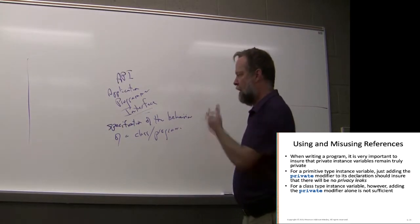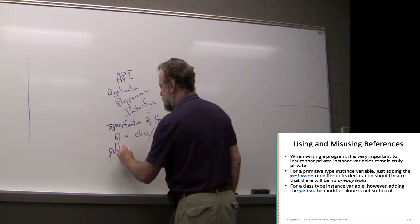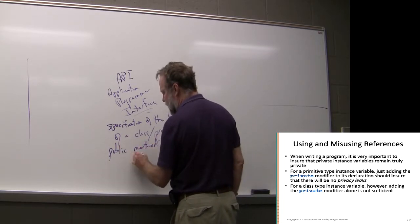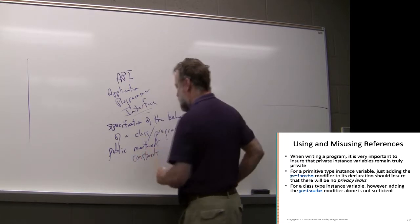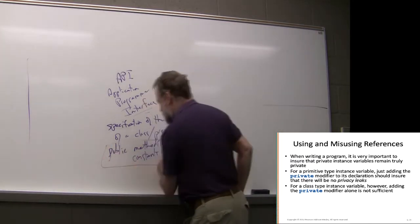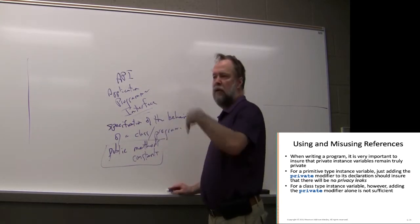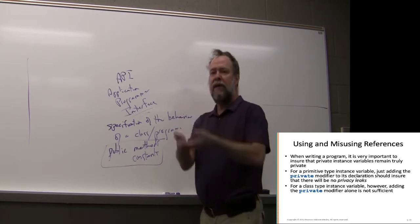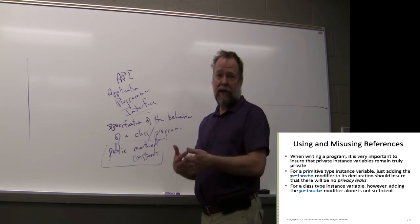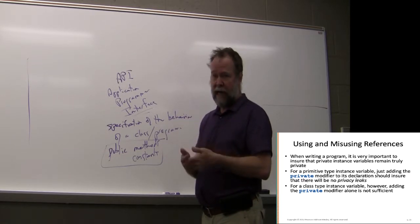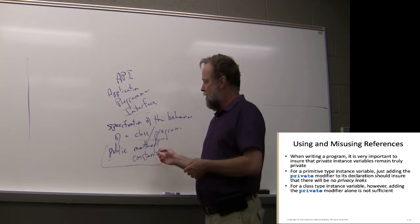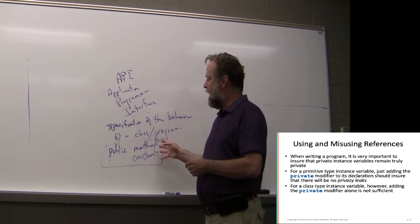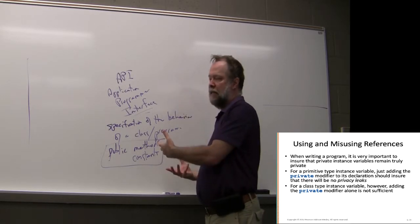In Java, the way we realize that concept is through the use of public methods and public constants, like class constants. You can specify those things, publish them in your Javadoc, and now if somebody else wants to use your code, you can just give them the dot-class file. They don't need the dot-java source code — just the compiled version — and they'll see the public definition.